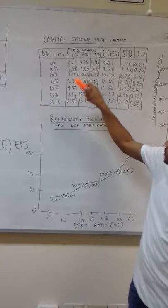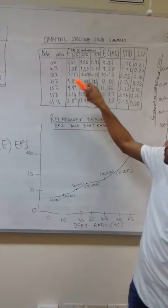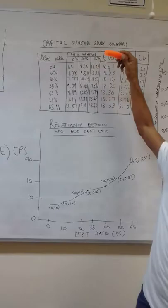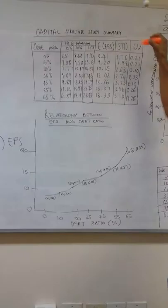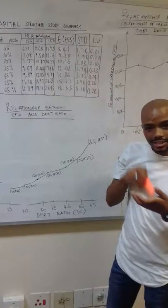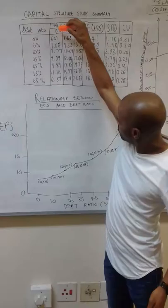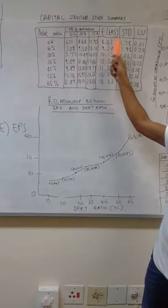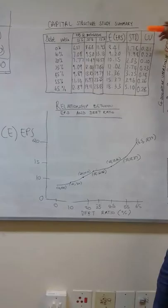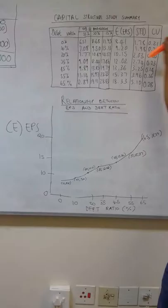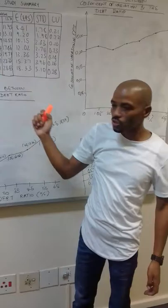The next step would then be calculating our expected earnings per share. This would be done by calculating the sum of the different probabilities multiplied by the different EPS values associated with those probabilities, and the sum of that would give us our expected earnings per share for the different capital structures. The next step would be calculating our standard deviation, done by taking the sum of the square root of the probability multiplied by the EPS minus the expected earnings per share, squared. The next step would be calculating our coefficient of variance, done by taking our standard deviation and dividing it by our expected EPS values, giving us our coefficient of variation of EPS.